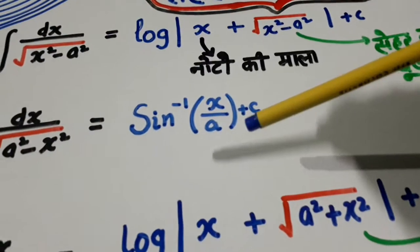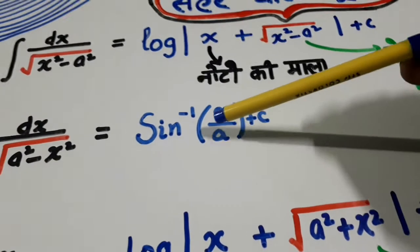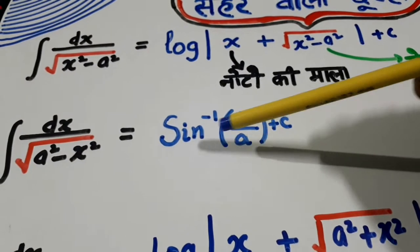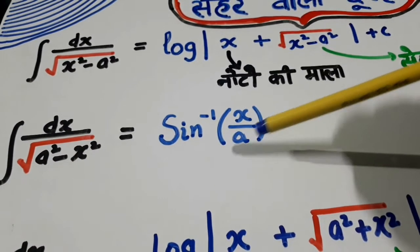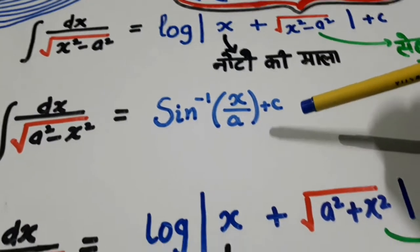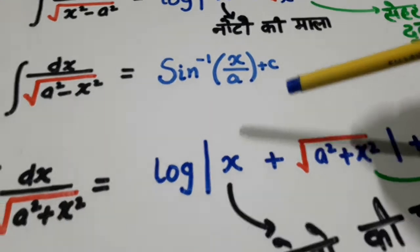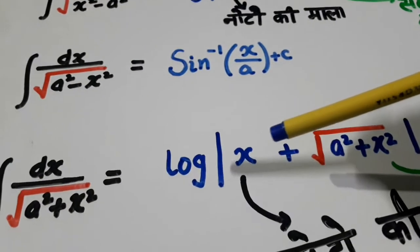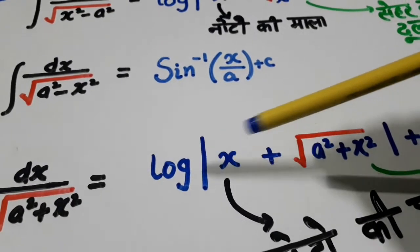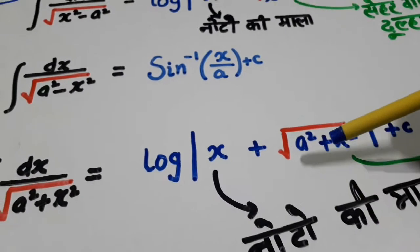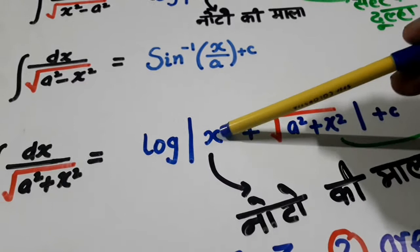Similarly, for the second type, you just put in the value of a: sine inverse x over a — that's all. And in the third case, again it is in terms of log.